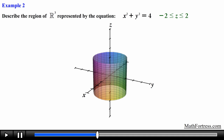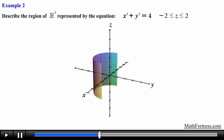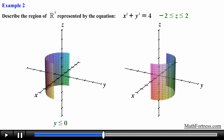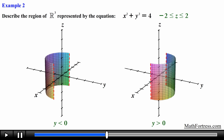We now have a cylinder that has a height of 4 units. What if we wanted to graph only the left half of the cylinder? We only want the part where the values of y are negative, so we add the inequality y is less than or equal to 0. For the right half we include y is greater than or equal to 0. Notice that in both cases we are including 0.